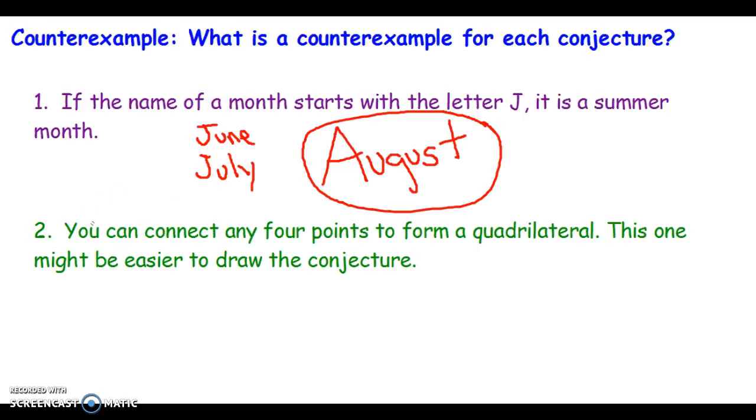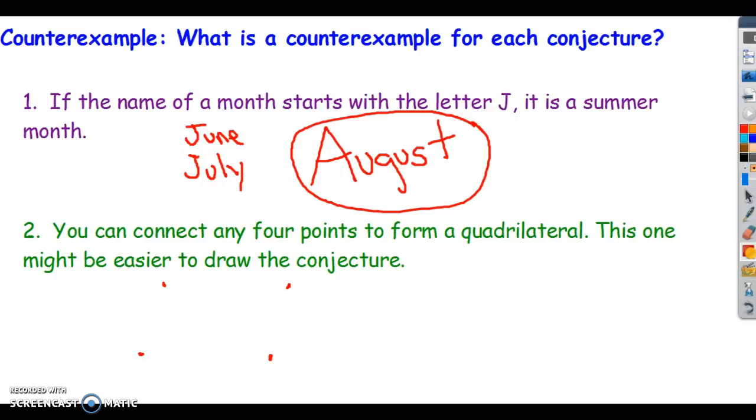Let's look at number two. You can connect any four points to form a quadrilateral. Well, this might be easier to draw this conjecture. So I've got four points. I am going to connect those four points. And when I do, I have a quadrilateral - it's just something with four sides. Now my question is, is there a way to connect those four points so that I do not have a quadrilateral?